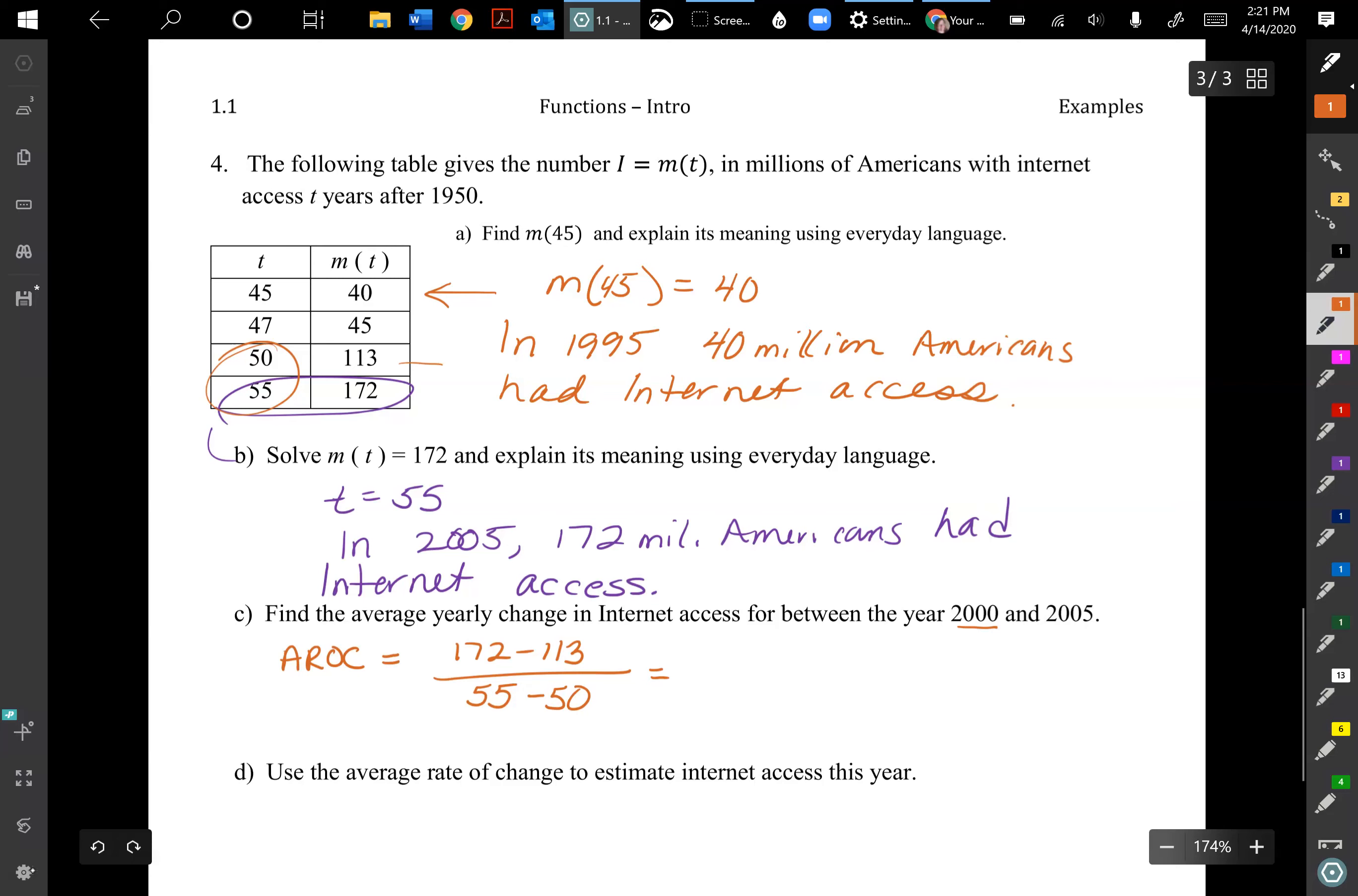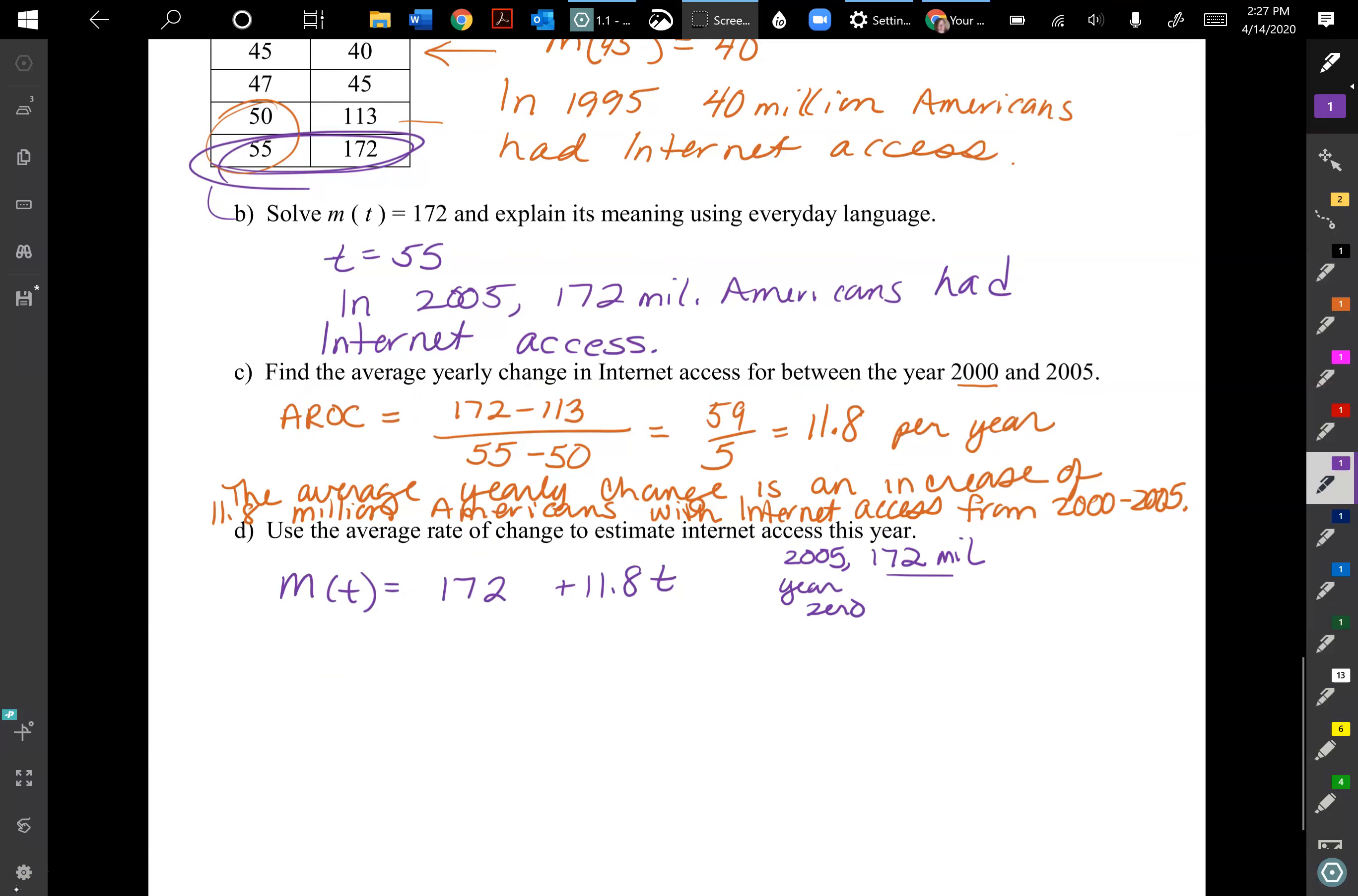Make sure you don't crisscross them. We have 55 minus 50, and then that equals 59 over 5. Go ahead and crunch the numbers, can use the calculator for that. 11.8 per year. We could write that out with a bunch of zeros but I think it's fine. 11.8 million is pretty everyday language to use, so we would write an average increase of 11.8 million Americans with access per year. That's from 2000 to 2005, so that's what the average yearly change is.